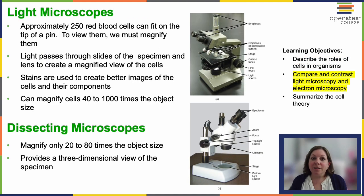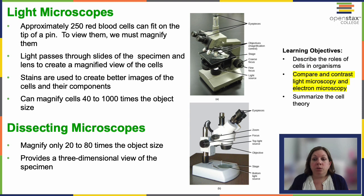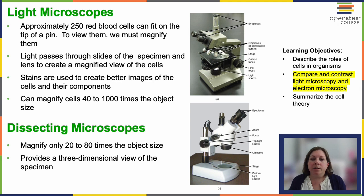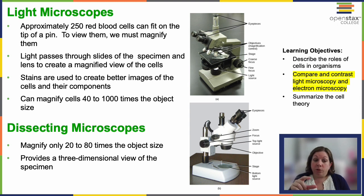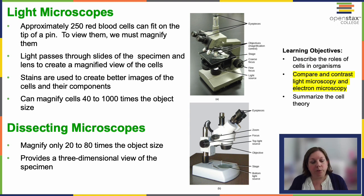First up is light microscopy — the most common type you're probably going to come across. This uses visible light to magnify and visualize samples. It's suitable for observing live specimens as well as fixed stained cells. A dissecting scope is going to be best for looking at three-dimensional objects or three-dimensional specimens, like a full tissue piece as opposed to a thin section. They require less preparation to view samples compared to a compound light microscope.